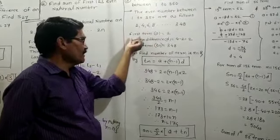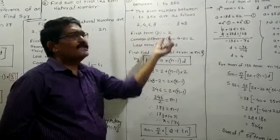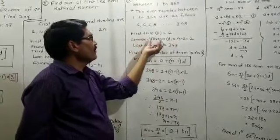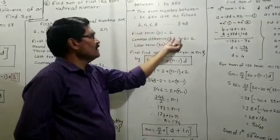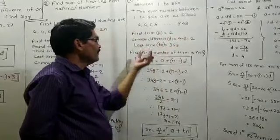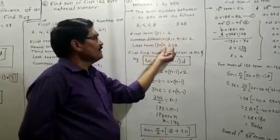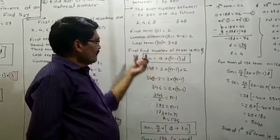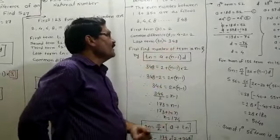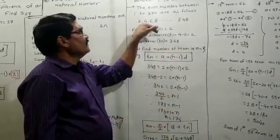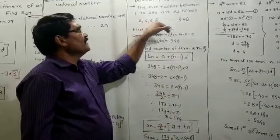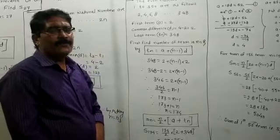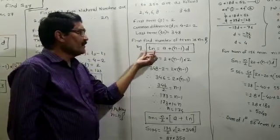First term A equals 2. Common difference: T2 minus T1 equals 4 minus 2 equals 2. Last term TN equals 348. Now, 2, 4, 6, 8, ... 348 — how many terms are there? You have to find that out using the formula of TN.